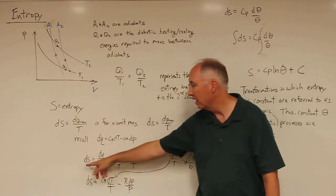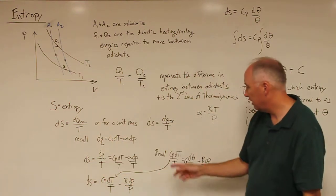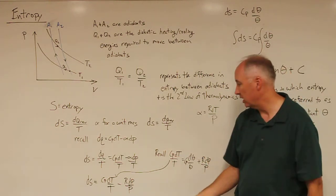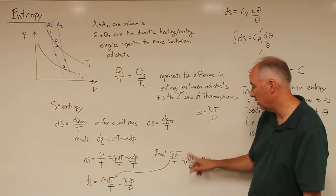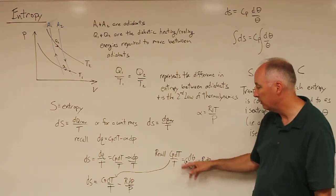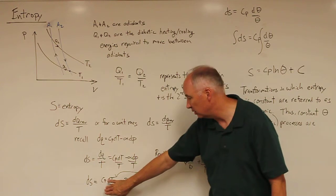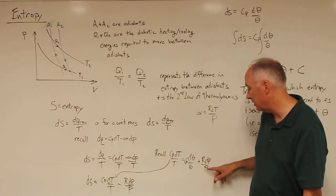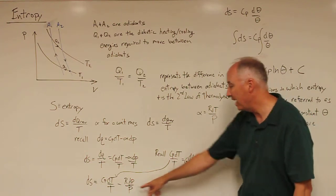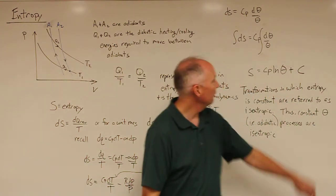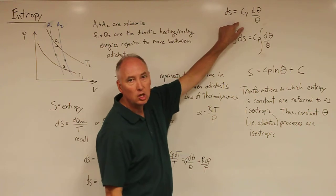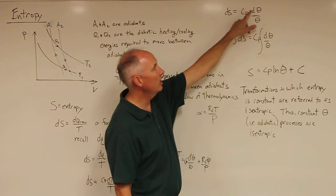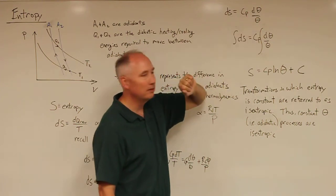is going to be ds. If you recall from the derivation for equivalent potential temperature, C sub P dT over T equals this quantity. If we substitute this quantity into the quantity down here, the R dP over P term actually cancels with this one, and you're left with this expression, which is the change in entropy equals C sub P times the change in potential temperature divided by the potential temperature.